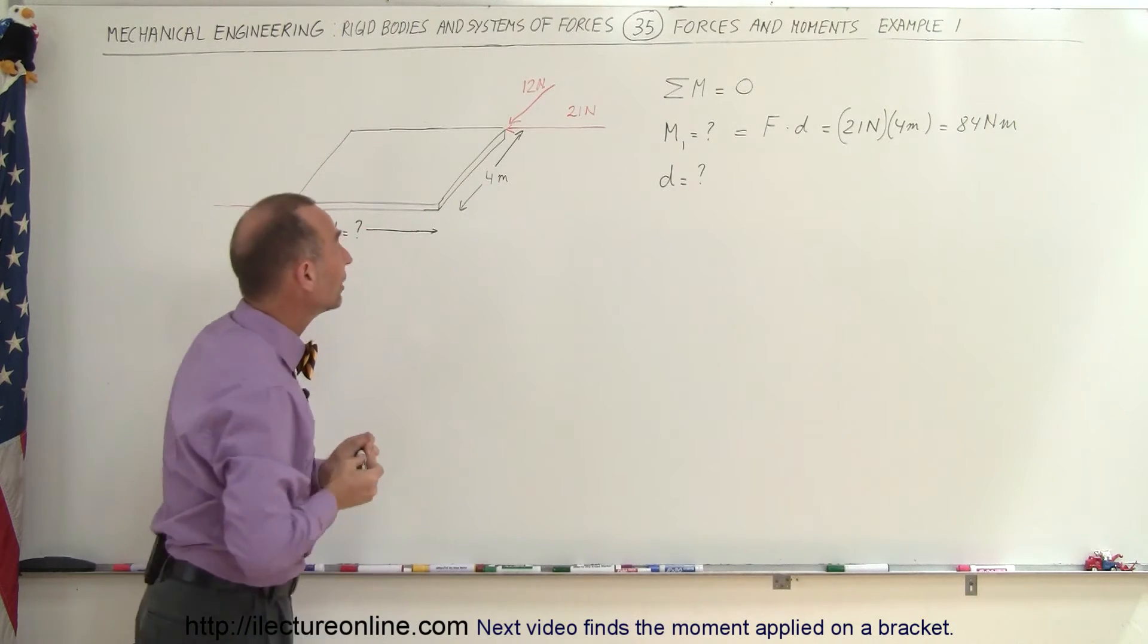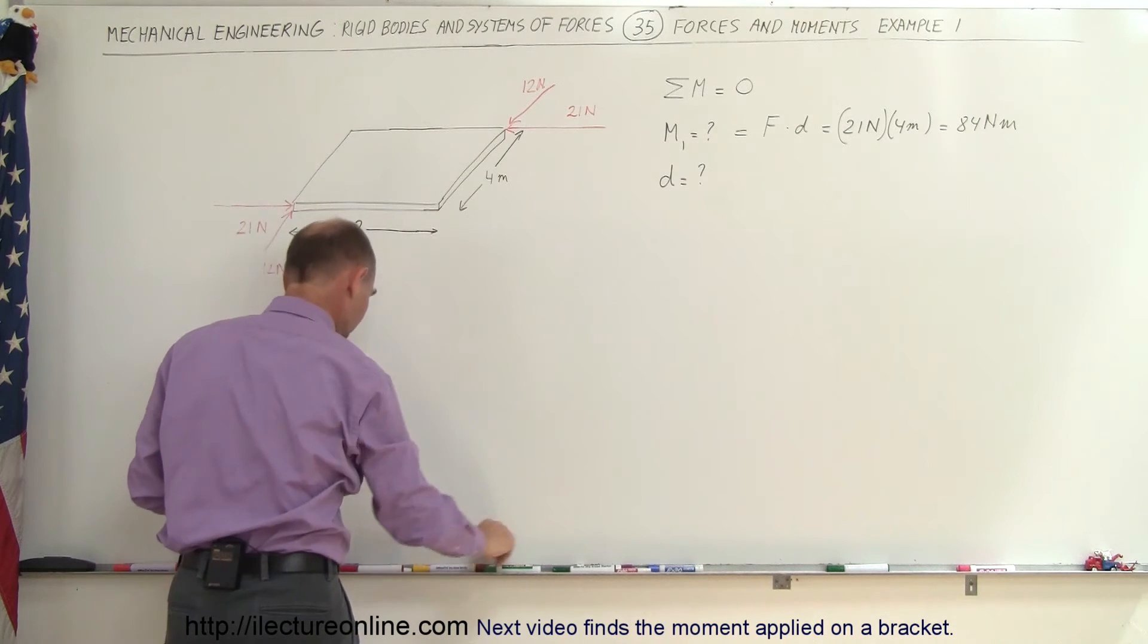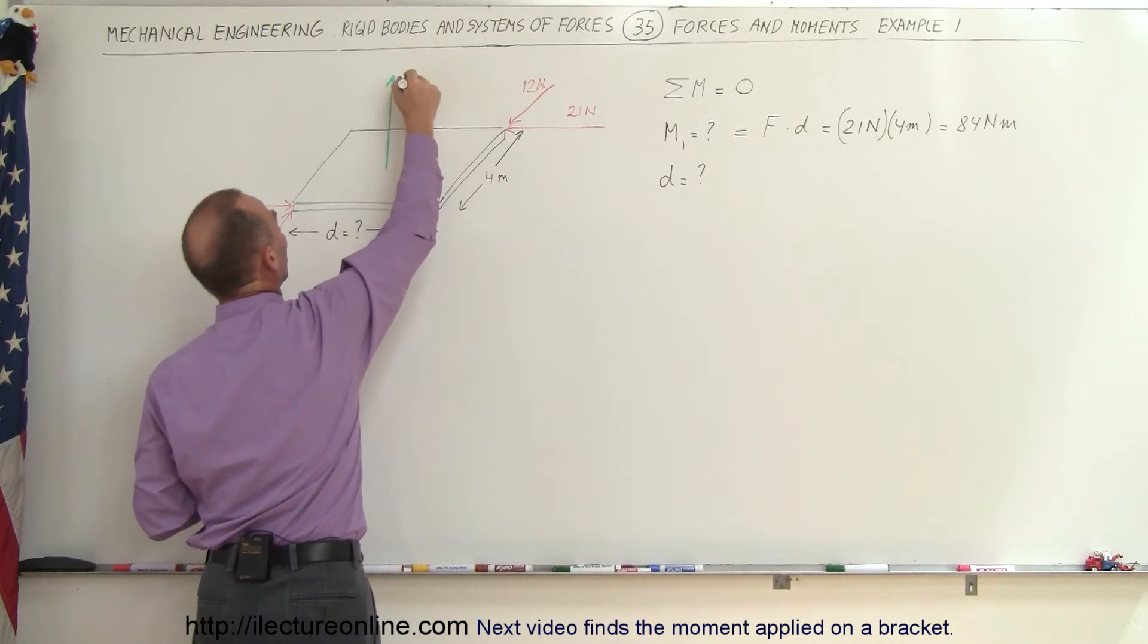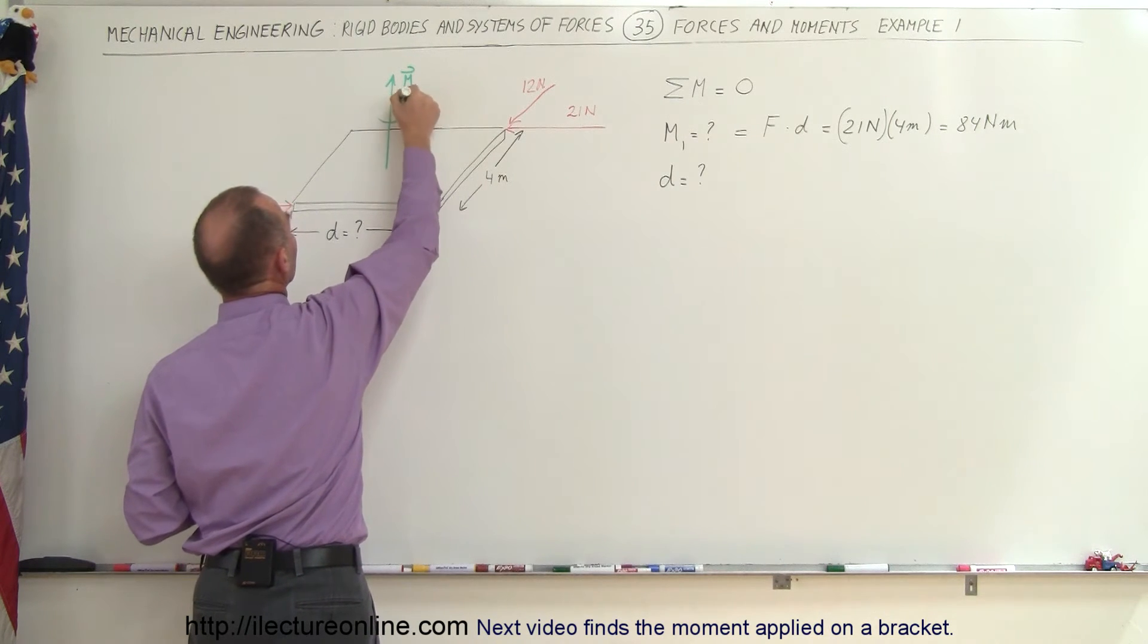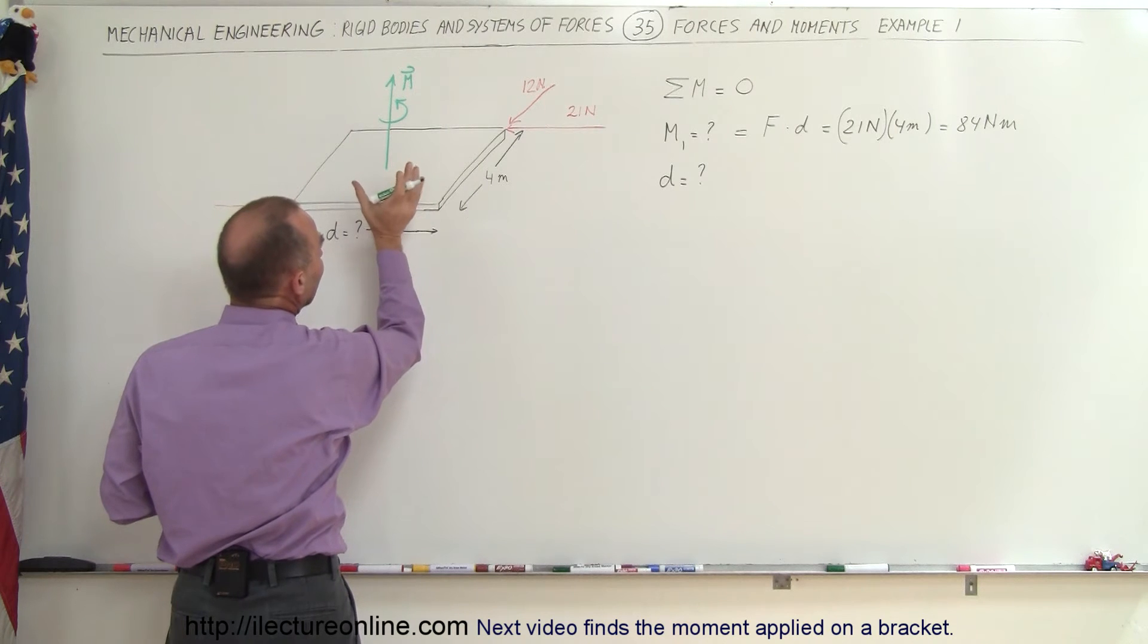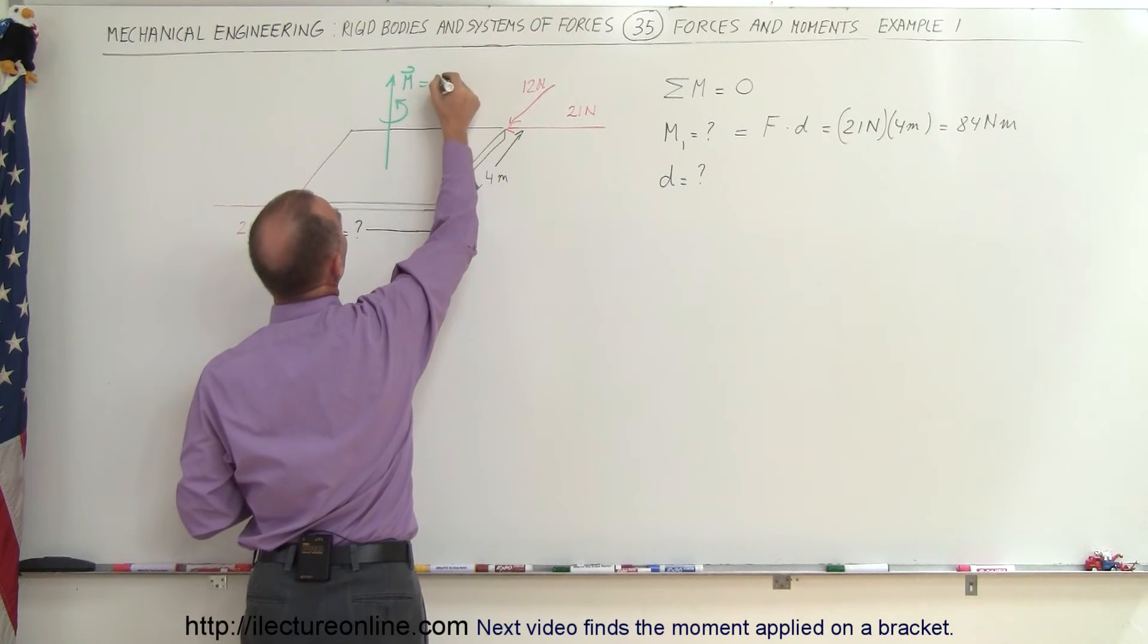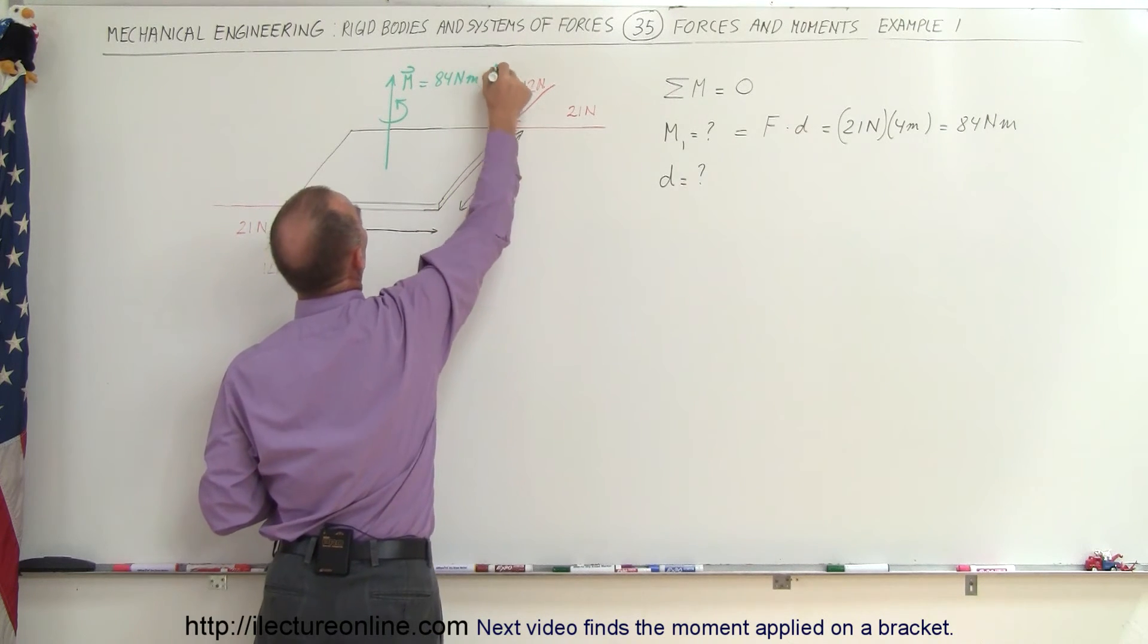The direction of the moment, again, the 21 Newton force causes a counterclockwise direction. So here's the moment, and counterclockwise would be in this direction right here, and so therefore that gives us a positive moment. So this is equal to a positive 84 Newton meters in the y direction.